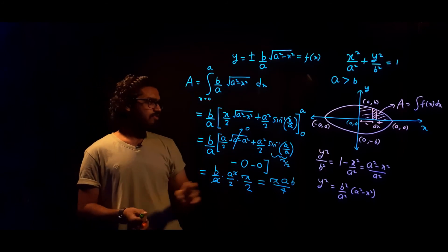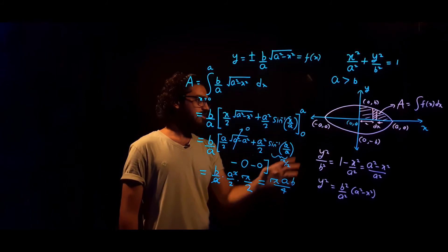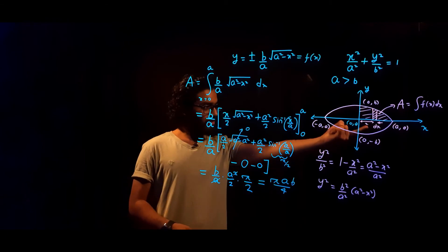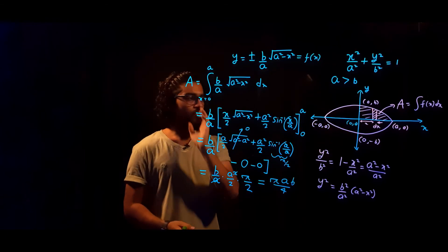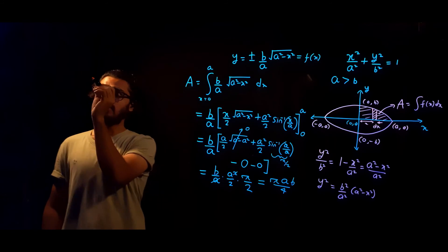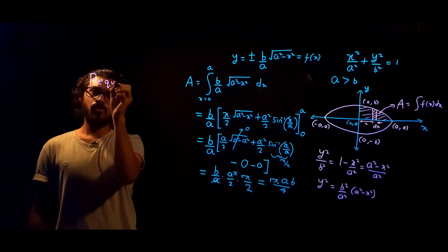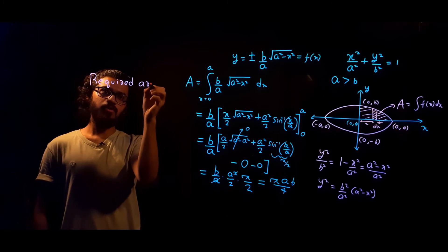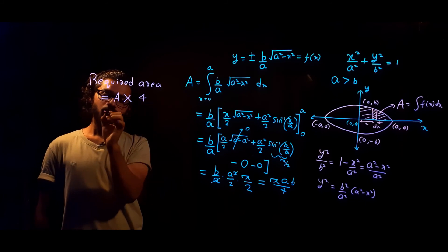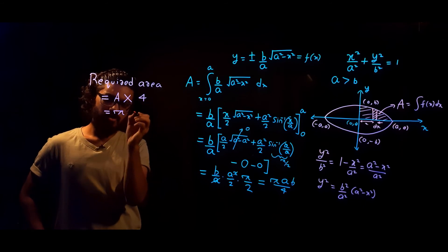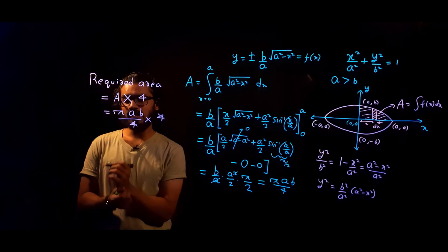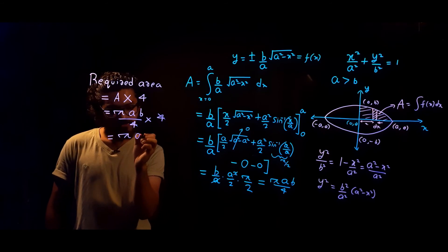This integral gives us the area in the first quadrant. To get the total area enclosed inside the ellipse, we multiply by 4: required area = 4 × (πab/4) = πab.